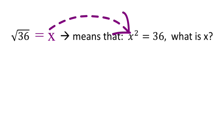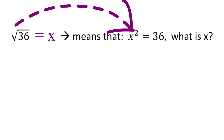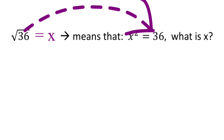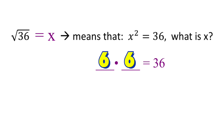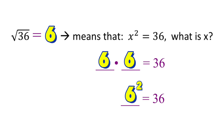Notice that x becomes the base of the exponential form, our index of 2 — which is invisible — becomes the exponent, and our radicand 36 becomes the answer to the exponential expression. We need to find x such that when we multiply it by itself twice, it gives us 36. That is: blank times blank equals 36, with the same number. Those two numbers are 6 times 6. So 6 squared equals 36, meaning x is 6. Therefore, the square root of 36 equals 6.